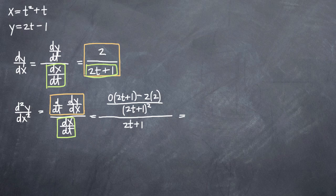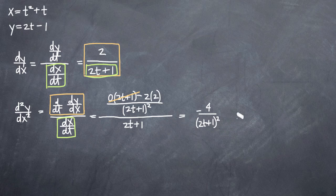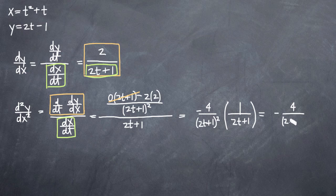So now we can go ahead and simplify this. As you can see, zero times two t plus one will go away — we'll get zero there. So we'll just get negative four on top, divided by two t plus one squared. And we have this two t plus one in our denominator. Dividing by two t plus one is the same as multiplying by one over two t plus one. So we end up with negative four in our numerator divided by the quantity two t plus one cubed in the denominator. And that's it — that's our second derivative.